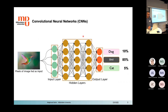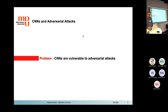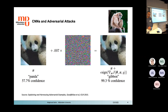Their ability to go beyond human precision has made these models a milestone in the history of AI. But as with all human inventions, they suffer from some problems — today we are focusing on their vulnerability against adversarial attacks. We are going to define what an adversarial attack is and how we can make CNNs more robust against them.